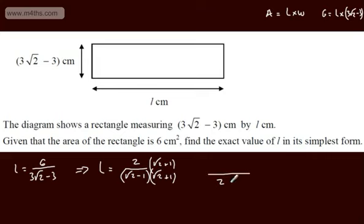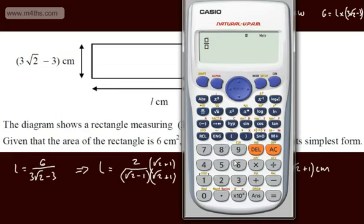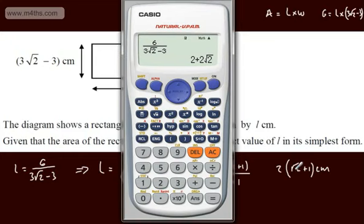Now we rationalise by multiplying top and bottom by the conjugate, root 2 plus 1. On the bottom: 2 minus 1 equals 1. On the top: 2 times (root 2 plus 1). This gives 2 lots of (root 2 plus 1) centimetres. Checking on a calculator — 6 divided by (3 root 2 minus 3) — gives 2 plus root 2 centimetres. So that's the value of L.